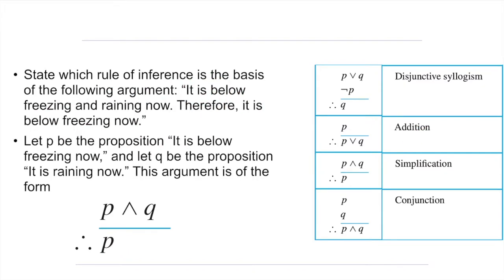Here is a similar example where we have to state which rule of inference is the basis of the following argument. The premises are 'it is below freezing and raining now,' and the conclusion is 'it is below freezing now.' We proceed the same way as before — we use propositional variables to represent each of the propositions. So we assign p to 'it is below freezing now' and q to 'it is raining now.'